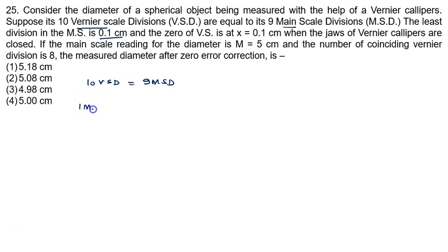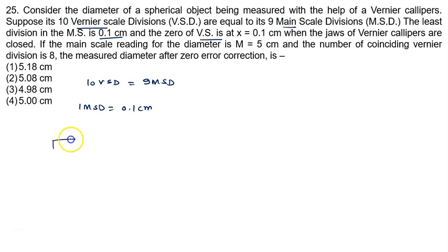1 MSD value is 0.1 cm. The zero of the Vernier scale is at x equal to 0.1. There is an error in the instrument — checking the Vernier zero against the main scale zero, the Vernier zero reads 0.1 cm.